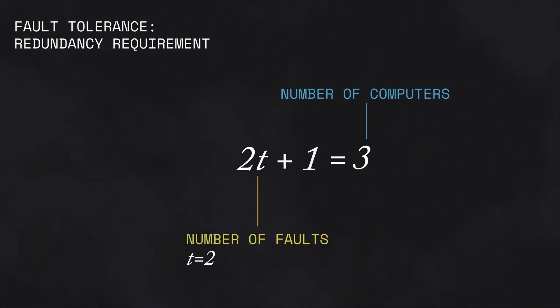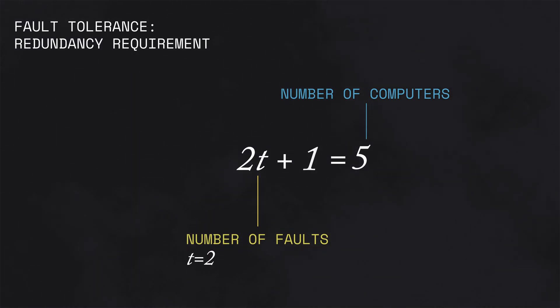If we want to handle 2 faults, we would need 2t×2+1, which would be 5 nodes. Faults usually don't happen, but the problem is they can happen. We don't know how they're going to happen, and we can't predict when they will. Let's do a run of our game working normally so that we have a full set of rules and a baseline.